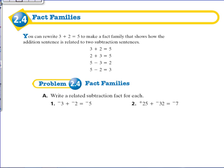Okay, so I'm going to go through some examples with you. First, I'm going to show you something that you should see as kind of familiar. It says you can rewrite 3 + 2 = 5 to make a fact family that shows how the addition sentence is related to two subtraction sentences. So here we have our fact families. We start off with 3 + 2 = 5.